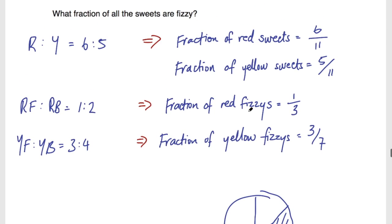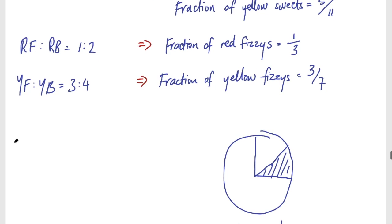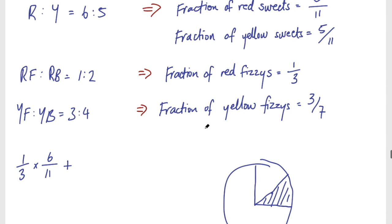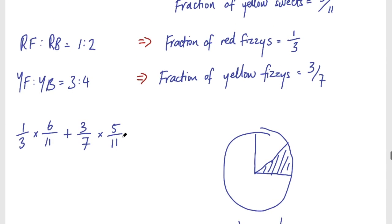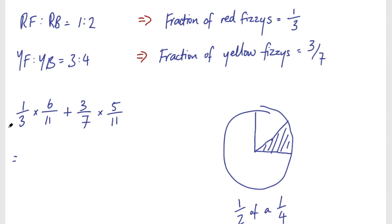So a third of the red sweets is fizzy, and the fraction of red sweets out of the total is 6 out of 11. So red fizzy sweets as a fraction of the total is 1/3 times 6/11. For yellow: 3/7 times 5/11. For 1/3 times 6/11, the 3 and 6 cancel — 3 goes into 3 once and into 6 twice — giving 2/11. Then 3/7 times 5/11: 3 times 5 is 15, 7 times 11 is 77, giving 15/77.